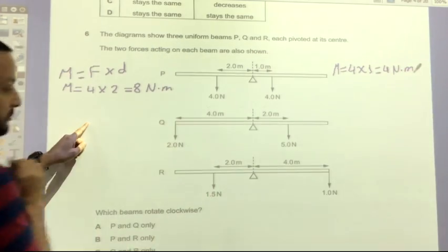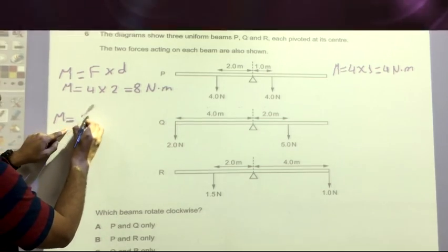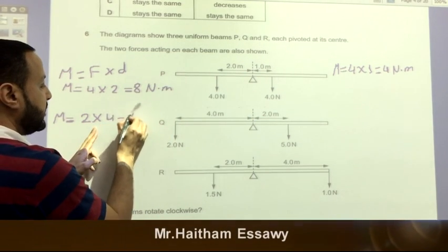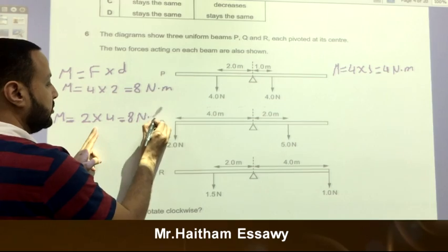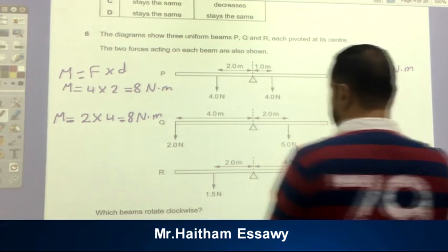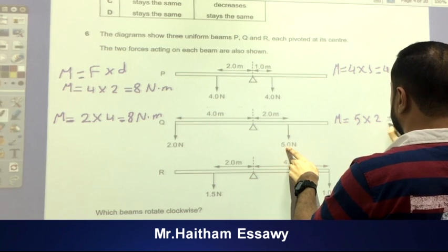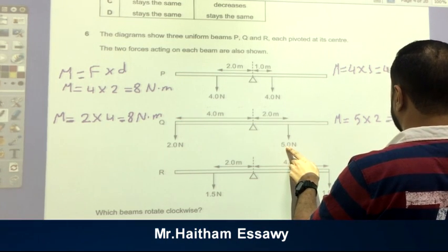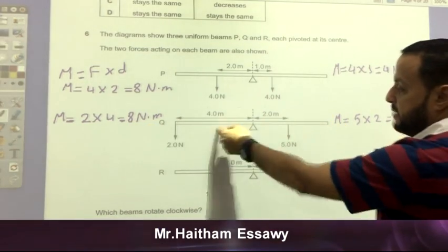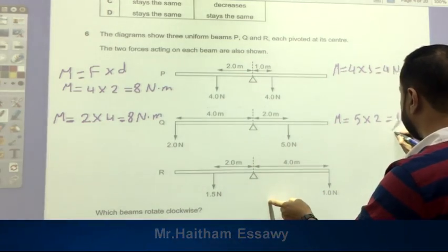The second one, M equals force which is 2 Newtons times distance from force to the pivot which is 4, equals 8 Newton dot meter. Here moment of force equals force which is 5 times 2 equals 10 Newton dot meter. Here we have 10 and here we have 8, so the beam will rotate in this direction which is clockwise. So this is from the right answer.